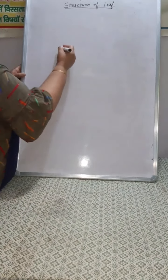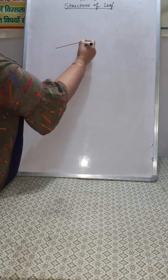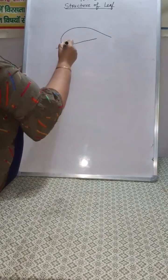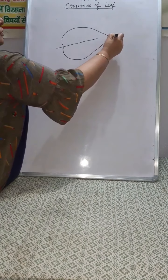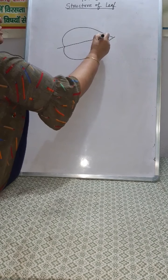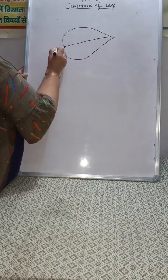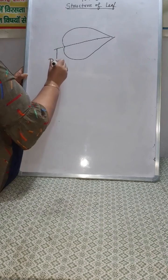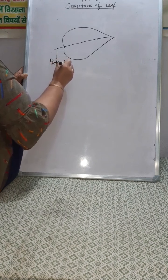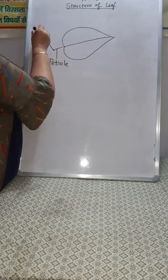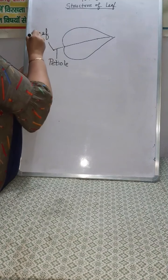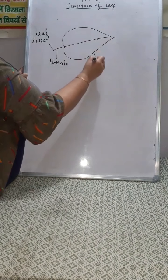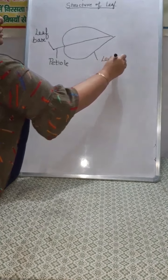10th class, structure of leaf. This is the leaf — the photosynthetic organ. This is the leaf stalk, it is called petiole. This is the leaf base. This whole part is called the leaf lamina.